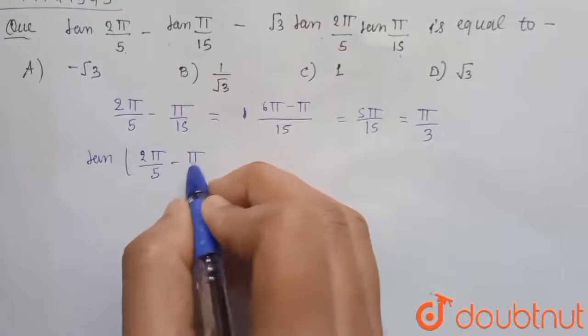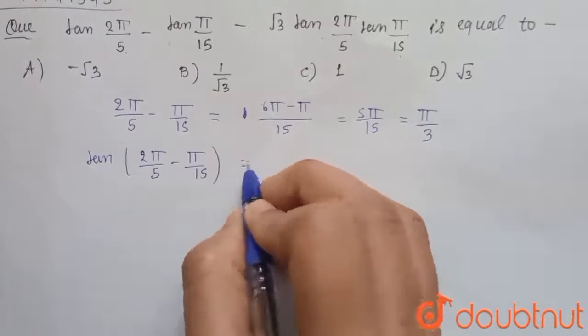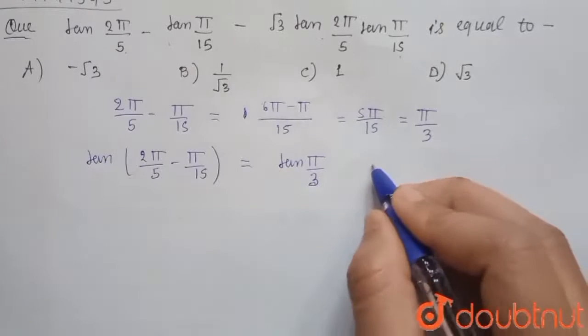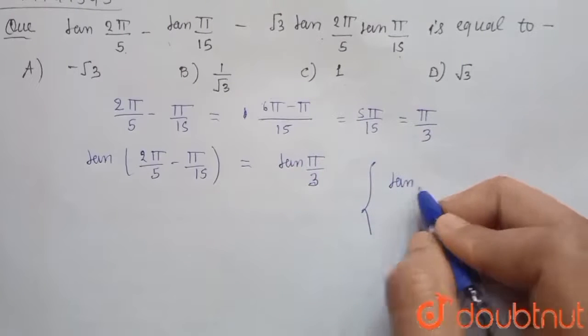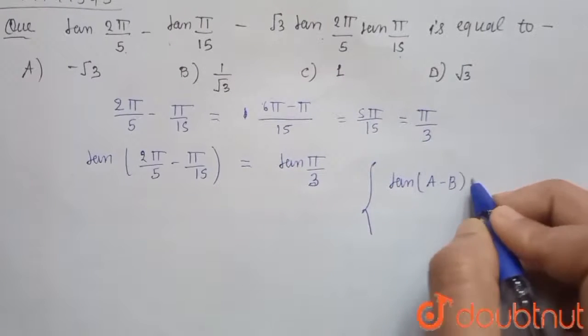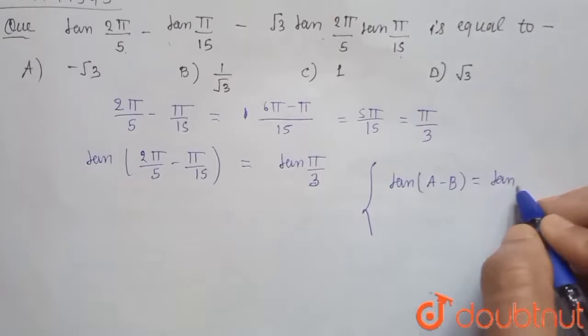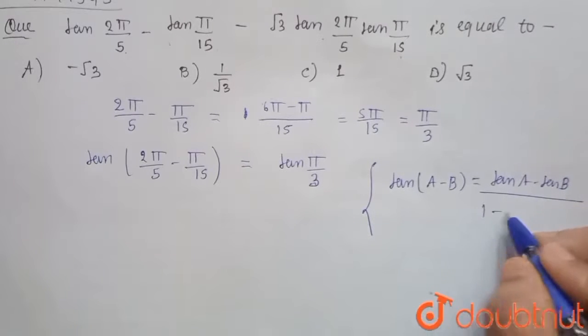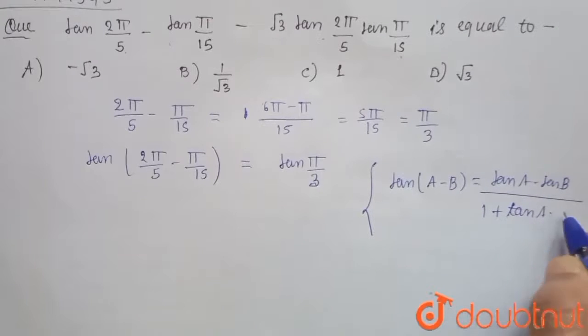of tan(A - B) is equal to (tan A - tan B) upon (1 + tan A into tan B). So from this formula, here we get (tan 2π by 5 minus tan π by 15) upon (1